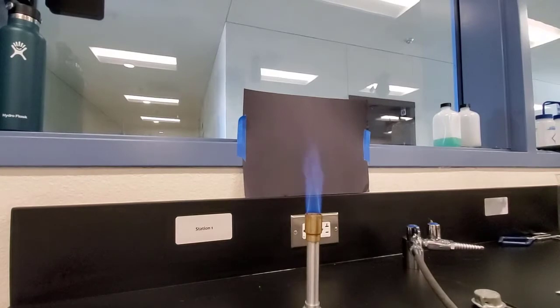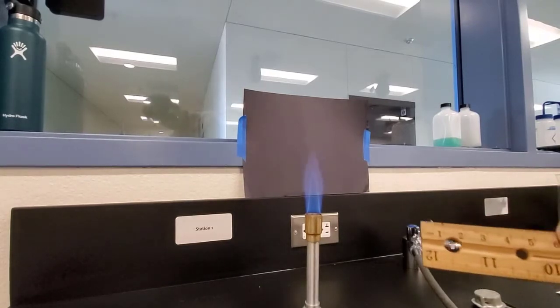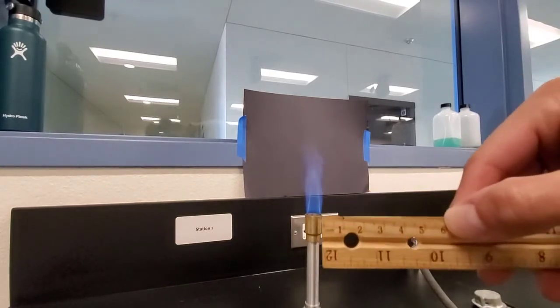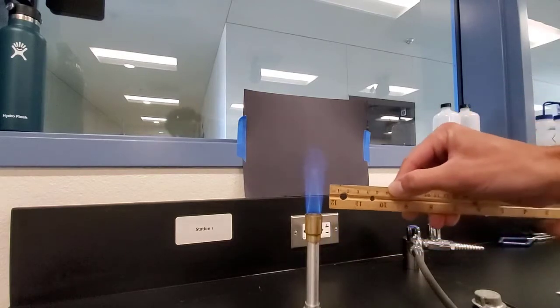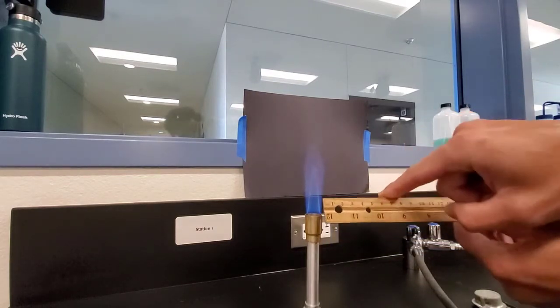Here I have a nice blue flame from our Bunsen burner, and what I'm going to do is I'm going to measure 6 centimeters and put my finger near the flame, 6 centimeters away from the flame.